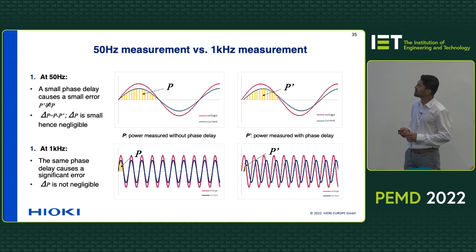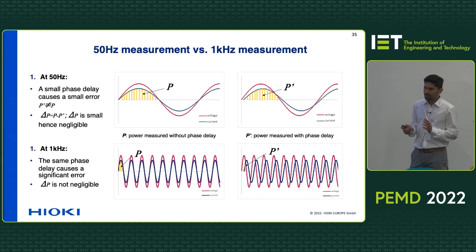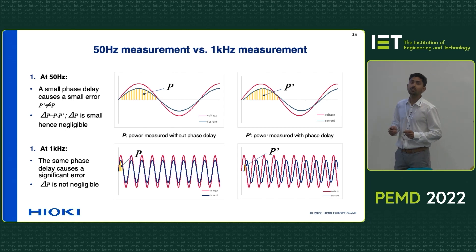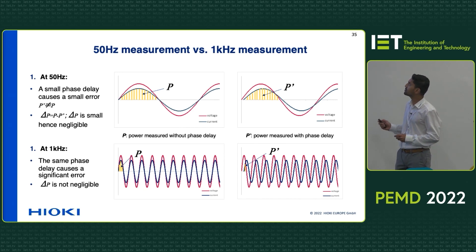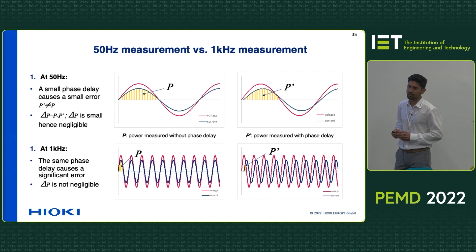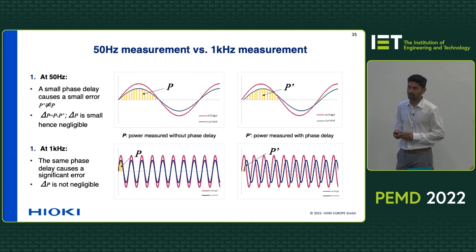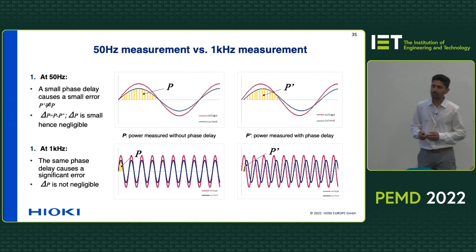The power that we are going to measure is not going to be the same — it's going to be a little bit different. The power we are measuring is P-dash, which is not exactly the same as P, but there is not a big difference. But if we do the same thing at one kilohertz of frequency, the same amount of phase error will cause a big difference in the power that we are measuring. At frequencies higher than one kilohertz — say 10 kilohertz or 100 kilohertz — this error is even more prominent.